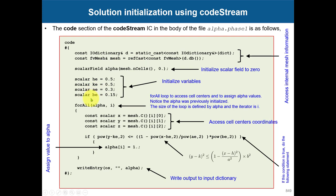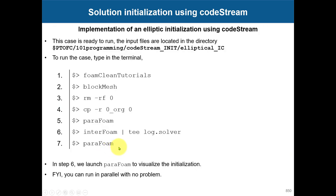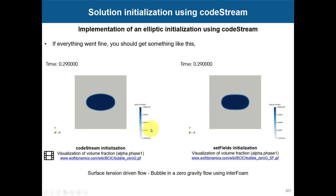You can also patch that automatically. Here's where you declare your loop — use the standard loop and access cell centers with the 'C' function. The supplemental slides cover a few important access functions. For codeStream in boundary and initial conditions, 'C' is the cell center and 'Cf' is the face center. You access cell centers and then apply your function — here we use a conditional for the elliptical initialization.